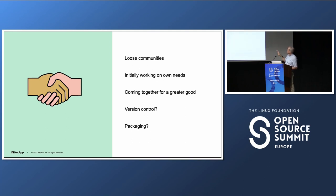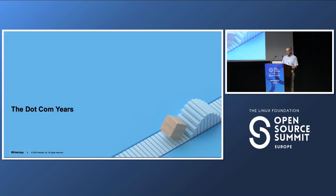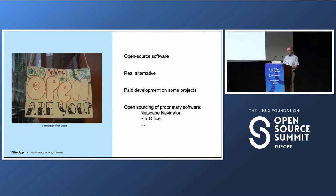Community-wise, we had loose communities. There wasn't this big group of people working on it. Most people came into it just by working for what they needed themselves, and then they pulled together for the greater good. Not every software was in a version control system back then. And the packaging was an issue — that's why the Linux distribution came up, actually. We got those figured out and started with the dot-com years, where open source, at least in some areas, became a real alternative.